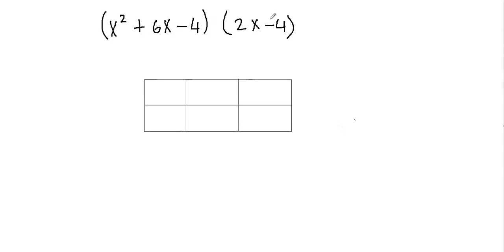I have a trinomial times a binomial and I've created this box in order to multiply them. First I'll take my first polynomial and put that on the top of the box. I have the x squared term first, so that will go here, then I have positive 6x, and then I have negative 4.